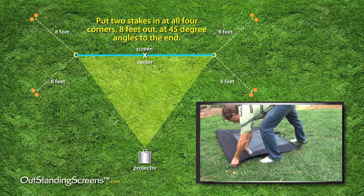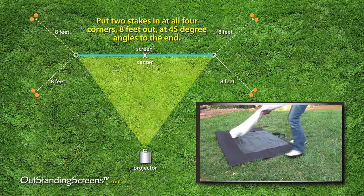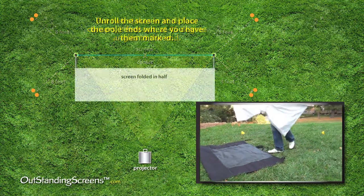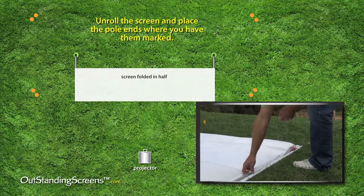Now, back to the carrying case. Remove the screen and roll it out in front of where it will stand. The screen comes folded in half.